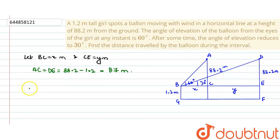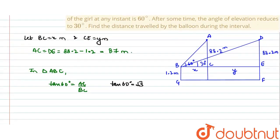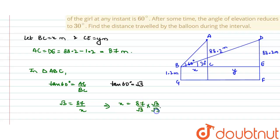In triangle ABC, tan(60°) = AC / BC. Since tan(60°) = √3, we have √3 = 87 / x. So x = 87 / √3. Rationalizing by multiplying by √3/√3 gives x = 87√3 / 3 = 29√3 meters.